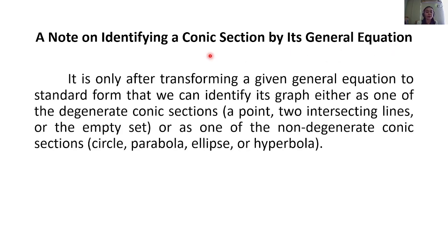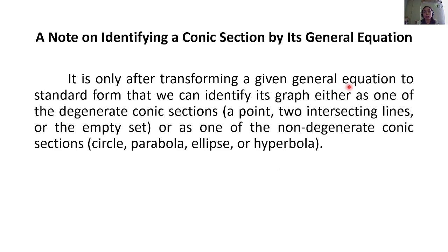Here's a note on identifying a conic section by its general equation: it is only after transforming a given general equation to standard form that we can identify its graph either as one of the degenerate conic sections — a point, two intersecting lines, or the empty set — or as one of the non-degenerate conic sections: circle, parabola, ellipse, or hyperbola.